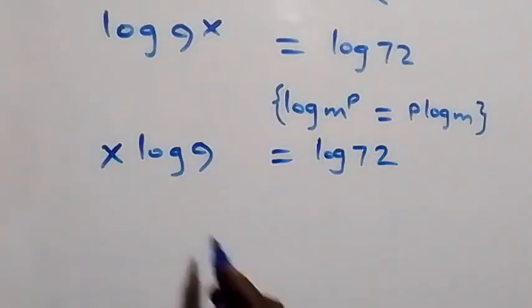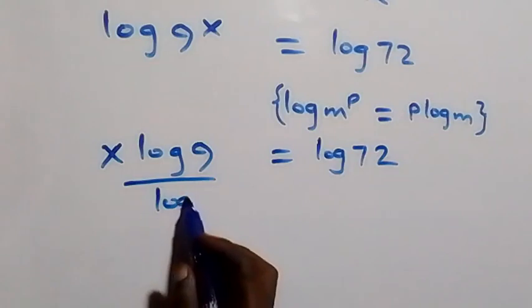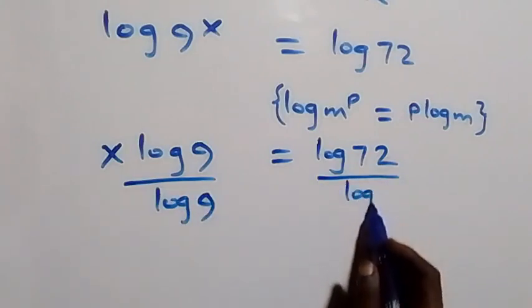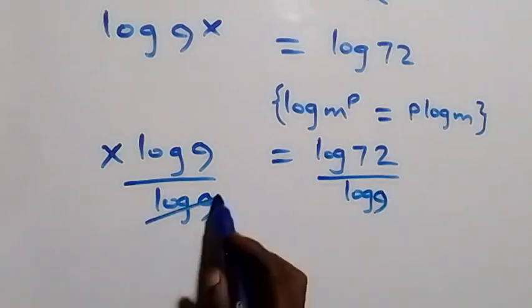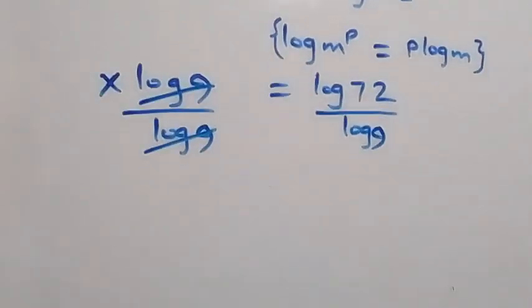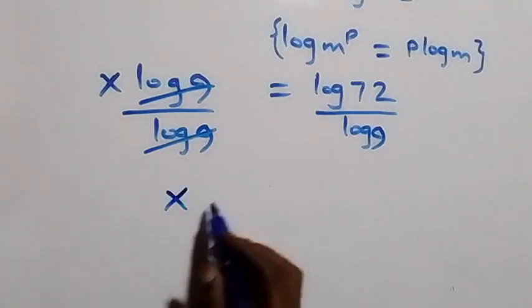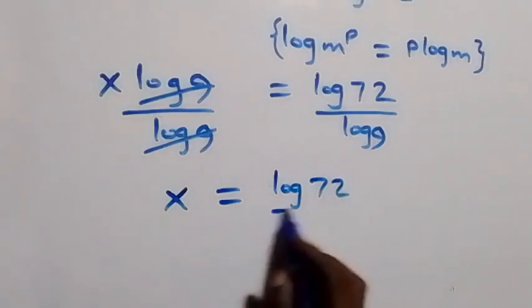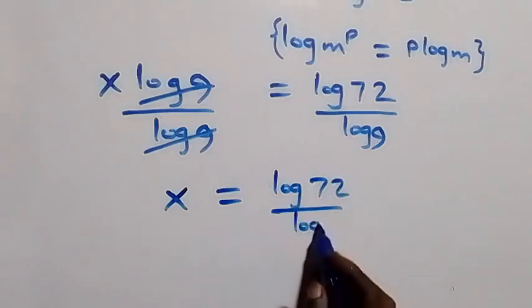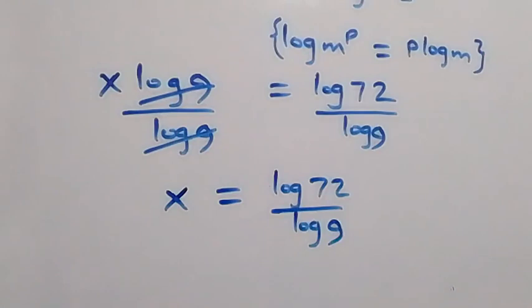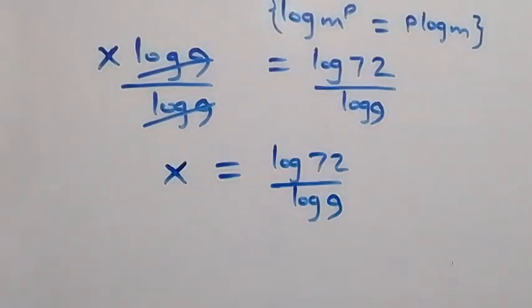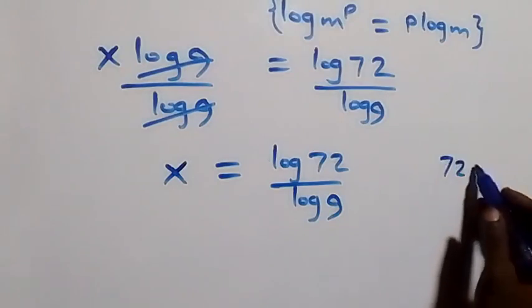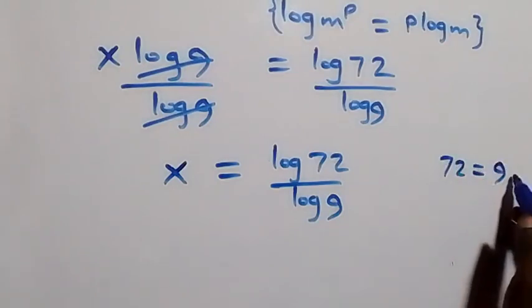Next, from here, if we divide both sides by log 9, the log 9 terms cancel each other, and we are left with x which equals log 72 over log 9.